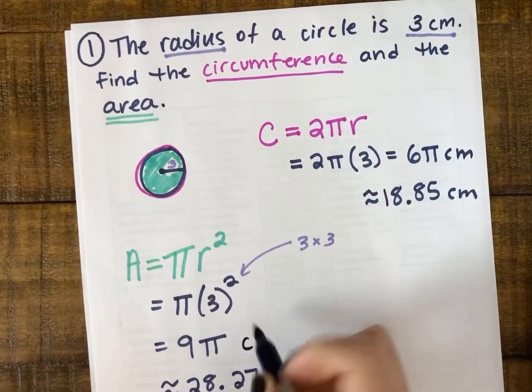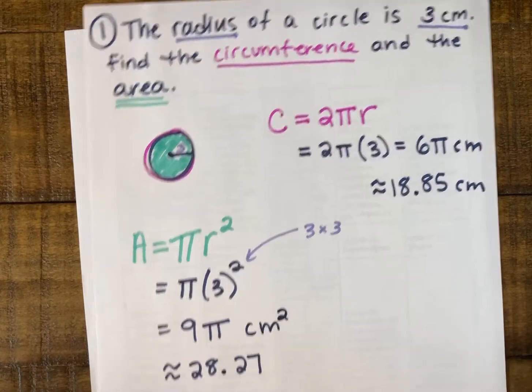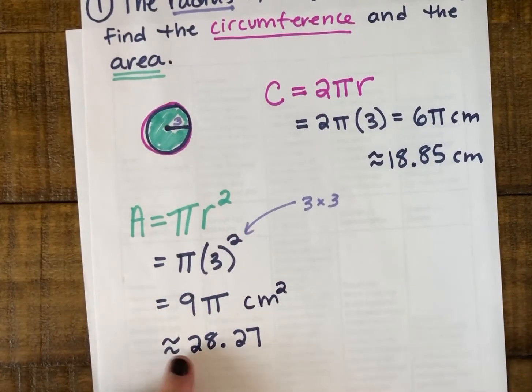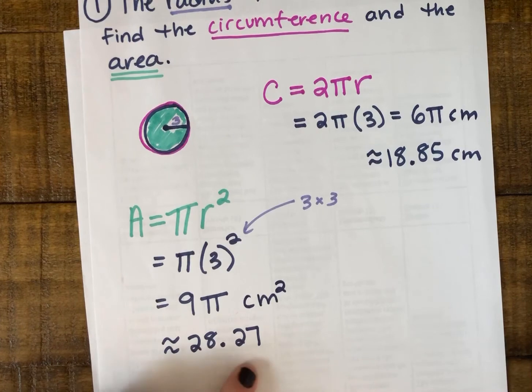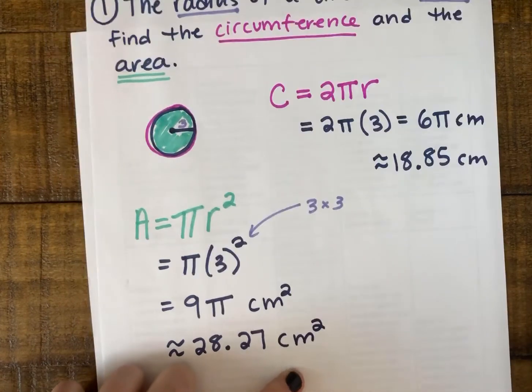So my answers would either be 9π square centimeters for my exact answer, or for my rounded answer, 28.27 square centimeters.